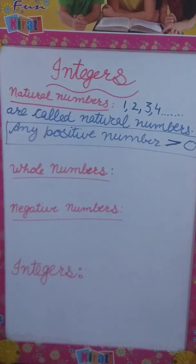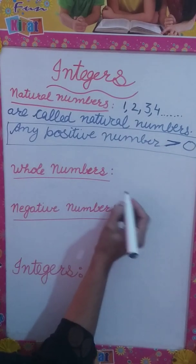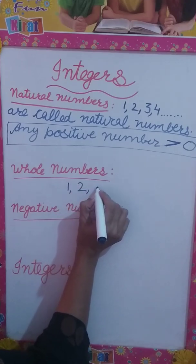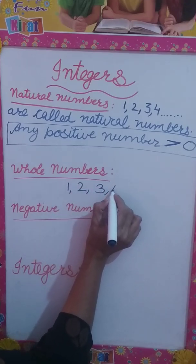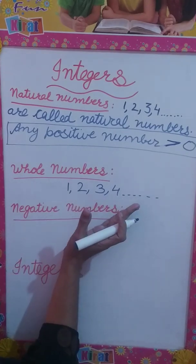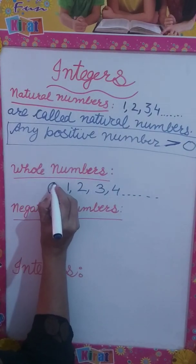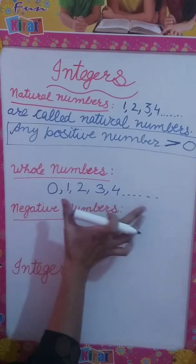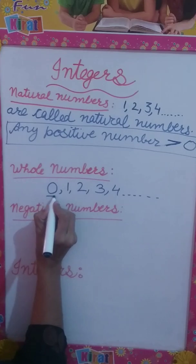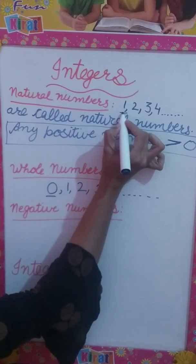Next is whole numbers. The counting numbers 1, 2, 3, 4 and so on — when we include 0 in it, it becomes the set of whole numbers. Whole numbers start from 0, while natural numbers start from 1.